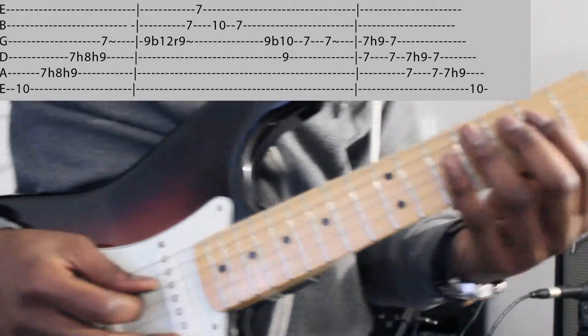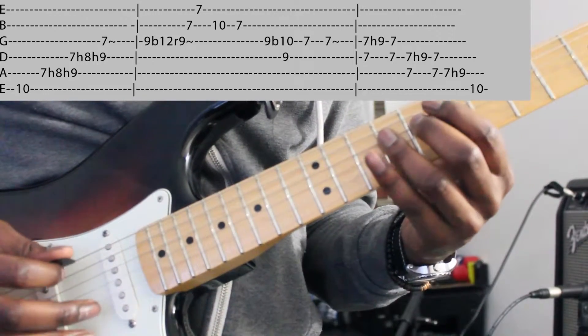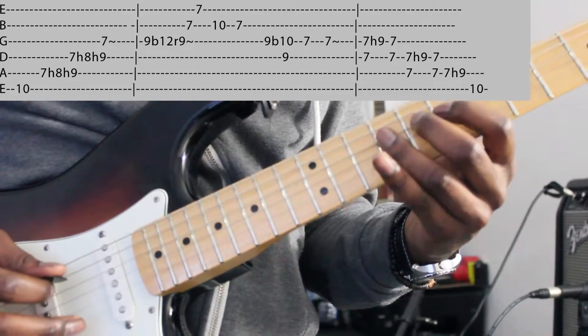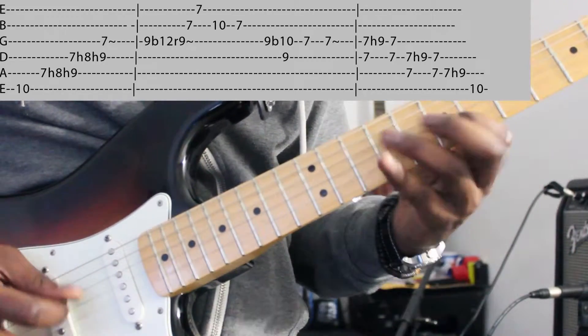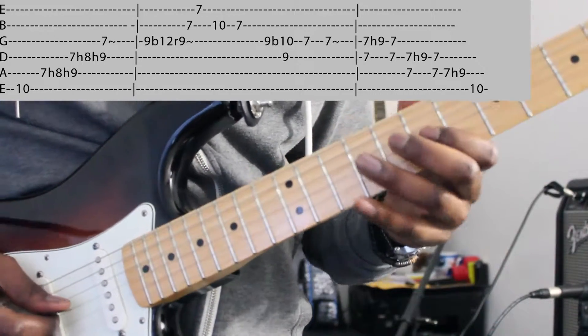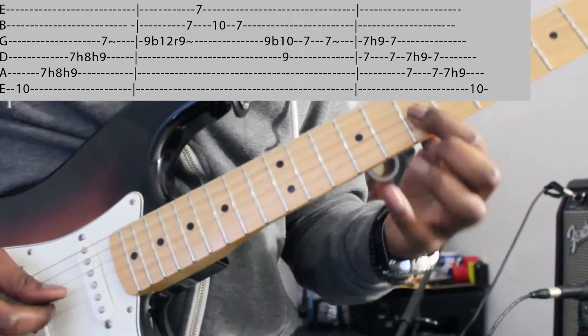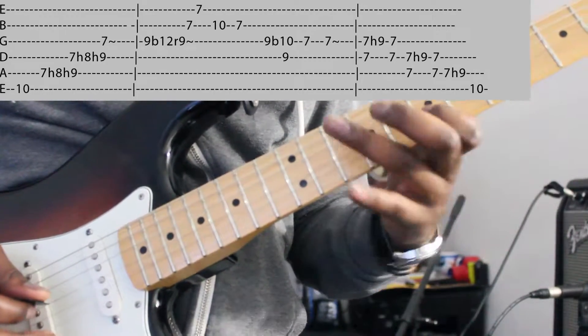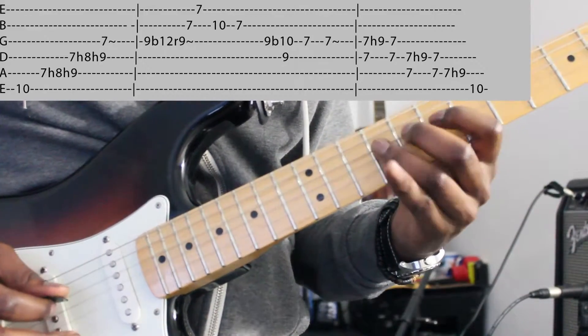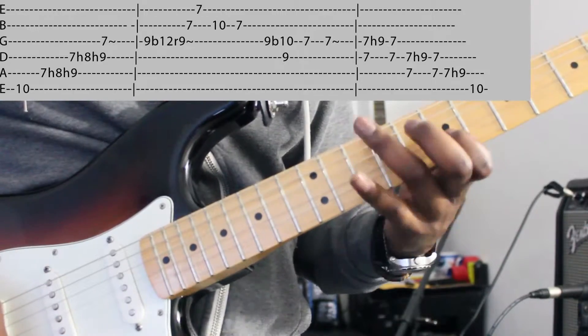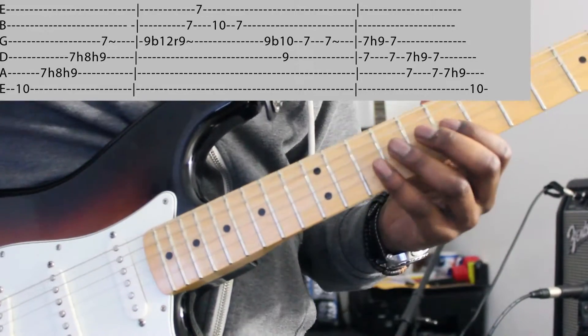And then after, we go on the D string and we do the same thing: 7, 8, 9. It's really because it makes a little ascent. And we finish the first part of the lick on the G string in seventh fret with a little vibrato. There, first part of the lick.